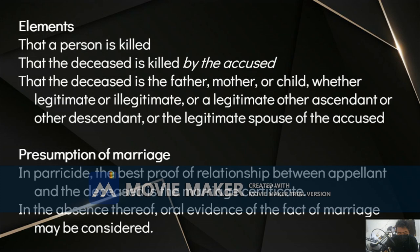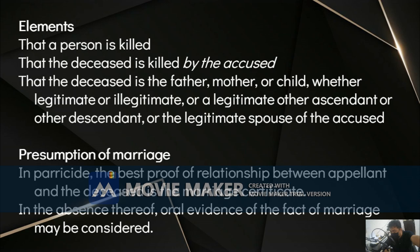What if the spouse is illegitimate — meaning they are not legally married — and they have a child together, and the man kills both? When there is no clear evidence of marriage, the man who killed both the woman and the child is liable for homicide or murder for killing the woman, but parricide for killing the child — because it doesn't matter whether the child is legitimate or illegitimate. So homicide for the woman, parricide for the child.